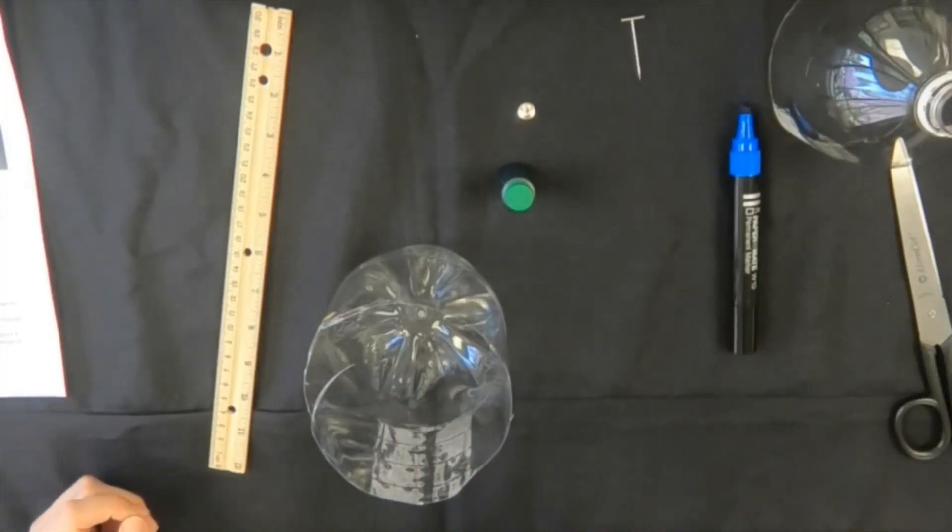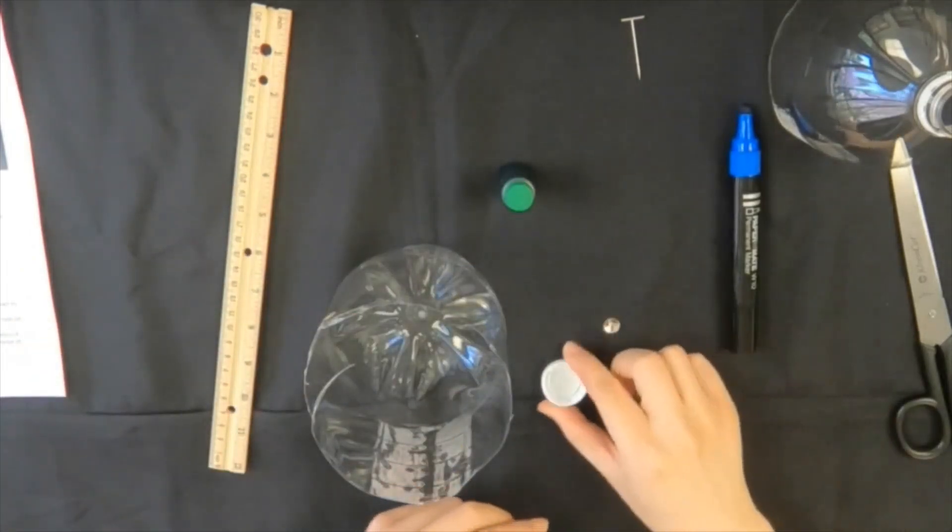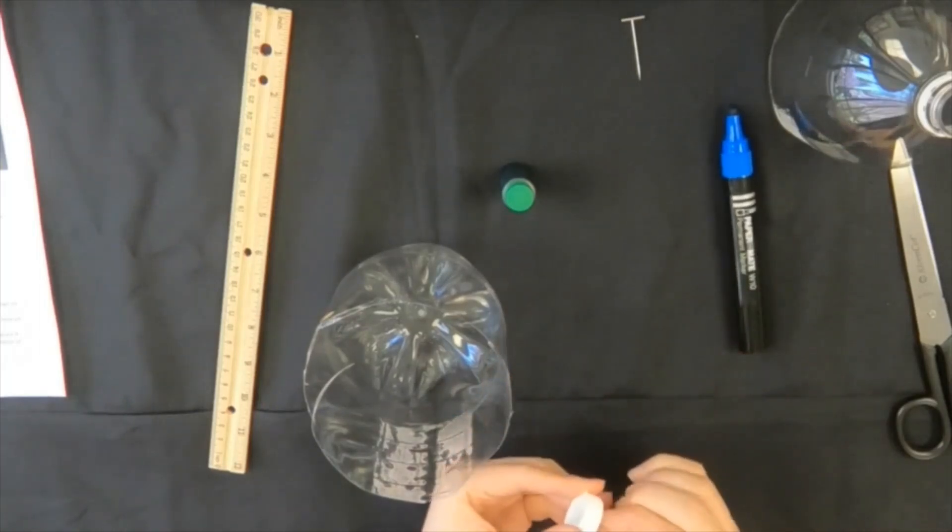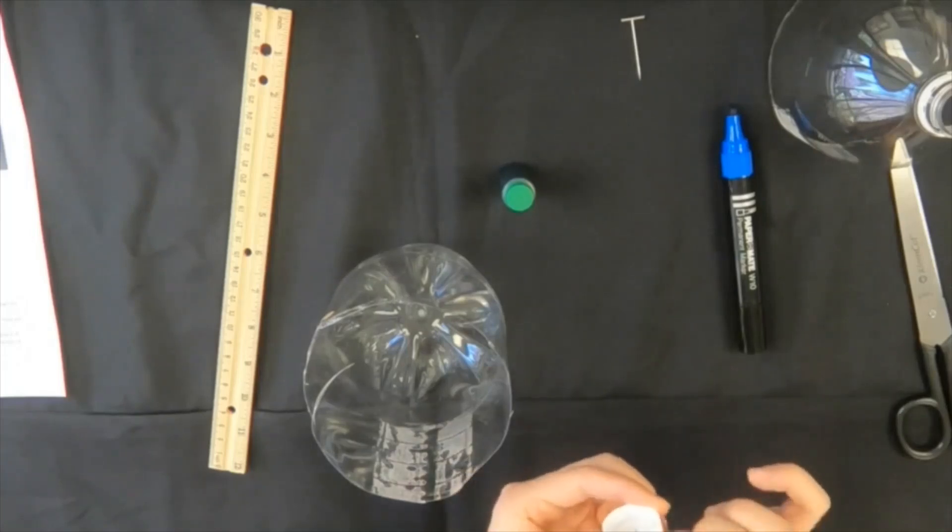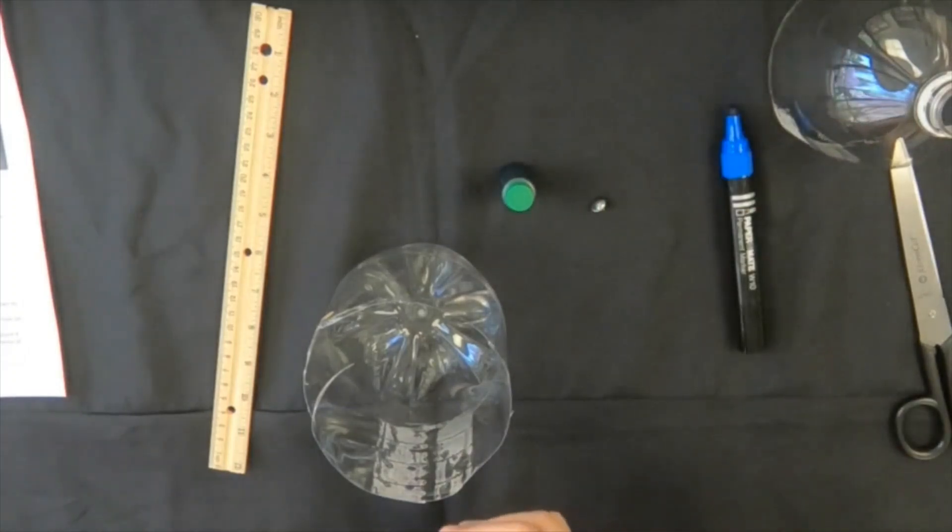Now take the bottle cap and use the drawing pin to make a hole in the cap. The smaller the hole, the longer the time to be measured. Enlarge the hole using another pin.